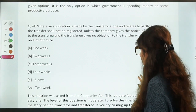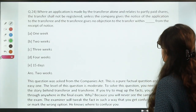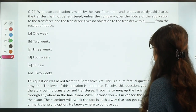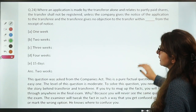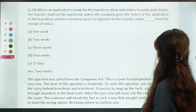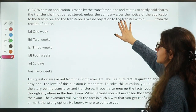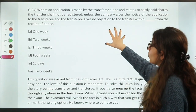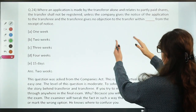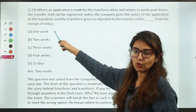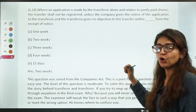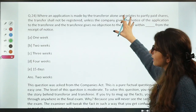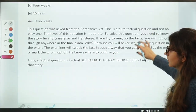Where an application is made by the transferrer alone for transfer of shares, the company gives notice to the transferree, and unless the transferree gives no objection to the transfer — within how many days of receipt of the notice? The answer is two weeks. Read language in such Companies Act questions very carefully as it is technical language. These provision-based questions can be difficult due to complex phrasing.